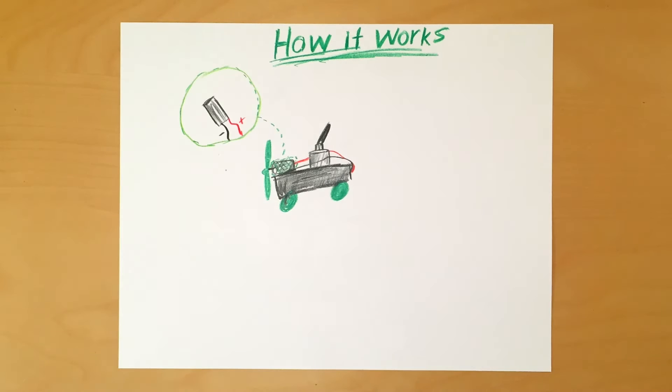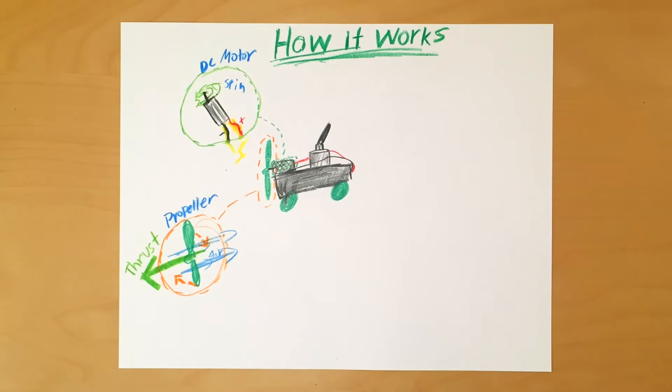When electricity passes from the battery pack and through the DC motor, it spins a propeller which pushes air behind the vehicle. When the propeller pushes air backwards, it creates thrust, which in turn moves the vehicle forwards.